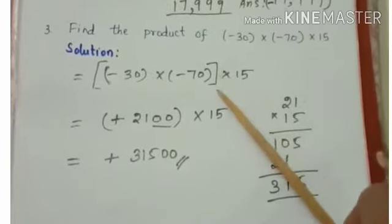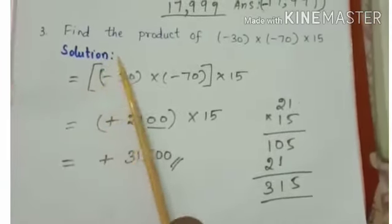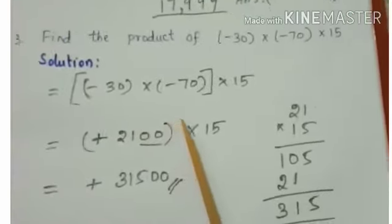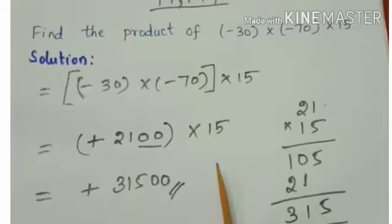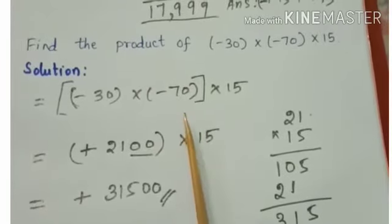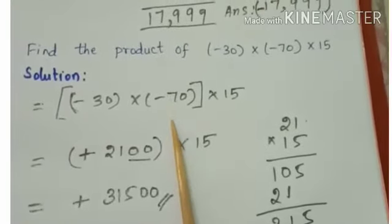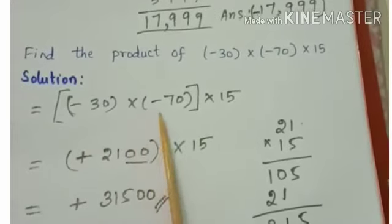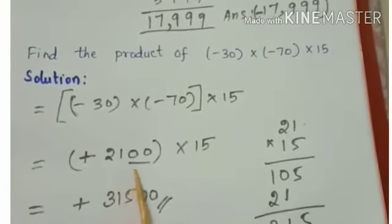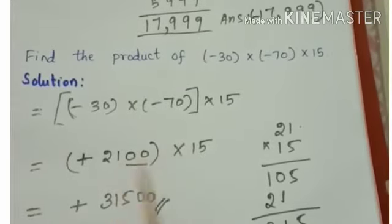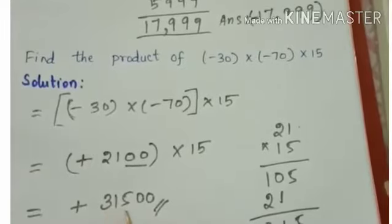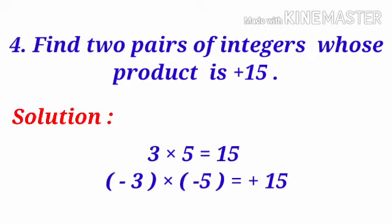Find the product of minus 30 into minus 70 into 15. By the associative property, we write it as (minus 30 into minus 70) into 15. The product of two negative integers is always positive: minus 30 into minus 70 gives 2,100. Then 2,100 into 15 gives 31,500. Two pairs of integers whose product is plus 15: 3 into 5 equals plus 15, and minus 3 into minus 5 equals plus 15.